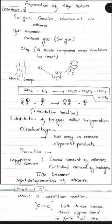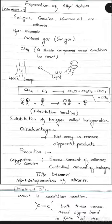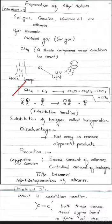ہم جس family کو تیار کرنے کی بات کر رہے ہیں وہ ہے alkyl halides — وہاں hydrocarbon میں halogen لگانا ہے، جسے general formula RX سے ظاہر کرتے ہیں۔ یہاں ایک reaction نظر آ رہا ہے جس میں methane کا reaction chlorine کے ساتھ ہو رہا ہے۔ آگے CH₃Cl، CH₂Cl₂ — different products بن رہے ہیں۔ carbon کے ساتھ لگا ہوا H، chlorine سے replace ہو رہا ہے — ایسے reaction کو substitution reaction کہتے ہیں۔